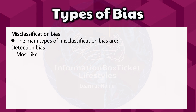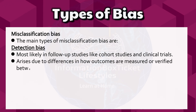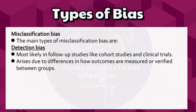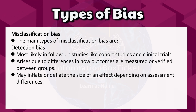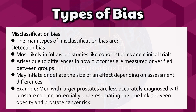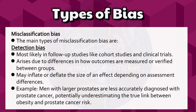Detection bias, most likely in follow-up studies like cohort studies and clinical trials, arises due to differences in how outcomes are measured or verified between groups, and may inflate or deflate the size of an effect. For example, men with larger prostates are less accurately diagnosed with prostate cancer, potentially underestimating the true link between obesity and prostate cancer risk.